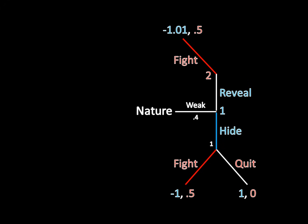If Player 1 as the weak type were to deviate from his alleged equilibrium strategy and reveal, then Player 2 fights, and Player 1 as the weak type gets a payoff of negative 1.01. Well, that's actually worse than what he gets by sticking to his strategy — the weak type hiding and getting a payoff of negative 1. So, once again, the weak type does not have a profitable deviation. He's better off sticking with the strategy originally proposed, and does not want to try to cheat or lie or pretend to be something else. He's perfectly happy staying where he is.